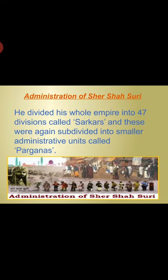The administration of Sher Shah Suri was followed by many rulers after him. He divided his whole empire into 47 divisions called Sarkars, and these were again subdivided into smaller administrative units called Parganas.